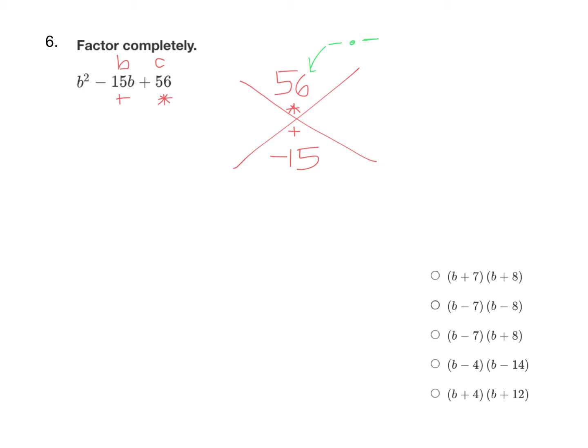Now if you see the factors right away, you can just go to your answer. If you're not sure, you can list out factor pairs of 56. I'm going to do that here.